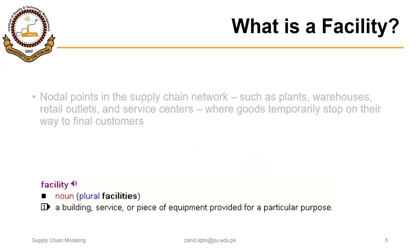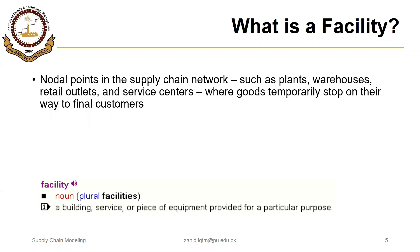In the last lecture, we discussed what is a facility. A facility is a nodal point in the supply chain network. So a facility could be a plant, it could be a warehouse, it could be a retail outlet, a service center, and so on. Goods temporarily stop on their way to final customers at these facilities.